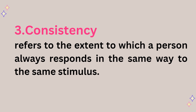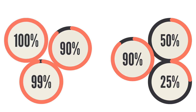Consistency refers to the extent to which a person always responds in the same way to the same stimulus. For example, if you consistently score 90% or above, your consistency is high. However, if your marks vary — sometimes fail, sometimes pass, sometimes top — then your consistency is very low.